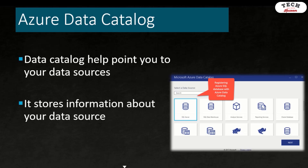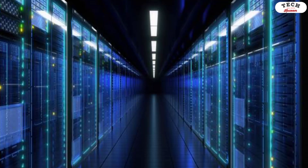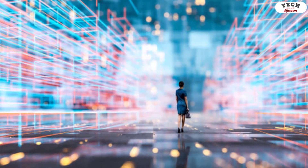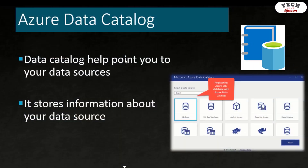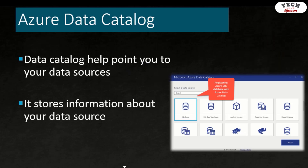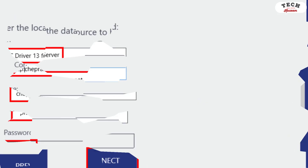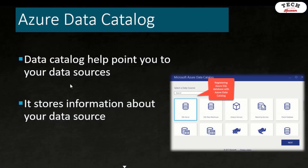The problem here is that people have data sources all around the place but are not sure where those data sources are, which is where the Azure Data Catalog comes in. The Azure Data Catalog helps point you to your data sources. You can set it up to store information about all your data sources, regardless of whether they are on-premises or in the cloud — including connection strings and the different locations of those data sources.